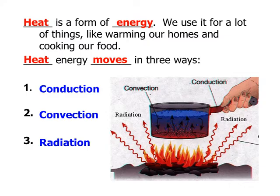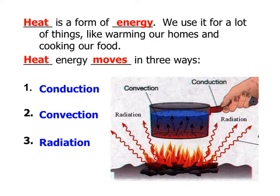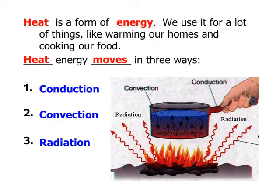We use heat for things like warming our homes and cooking our foods. Heat moves in three different ways, and it always moves from the warm to the cooler region. If you look at this picture, all three types are shown in a pot heating up. The fire is radiation, the fire heats the pot and the liquid inside heats up through convection, and as the pot heats up it moves down the handle into the person's hand — that's conduction.